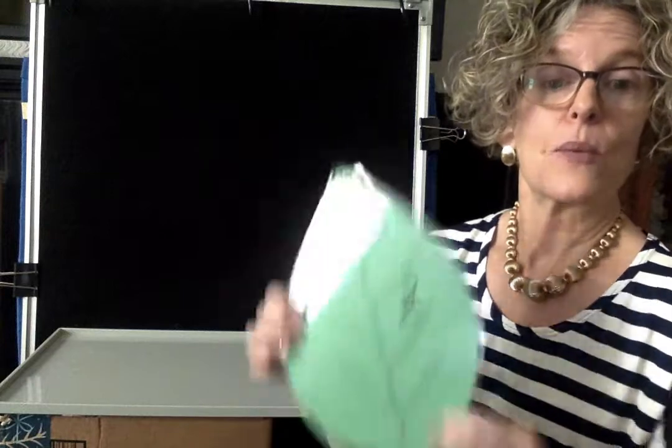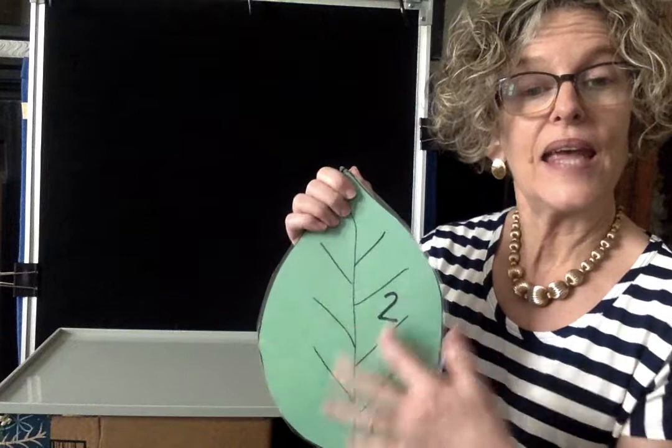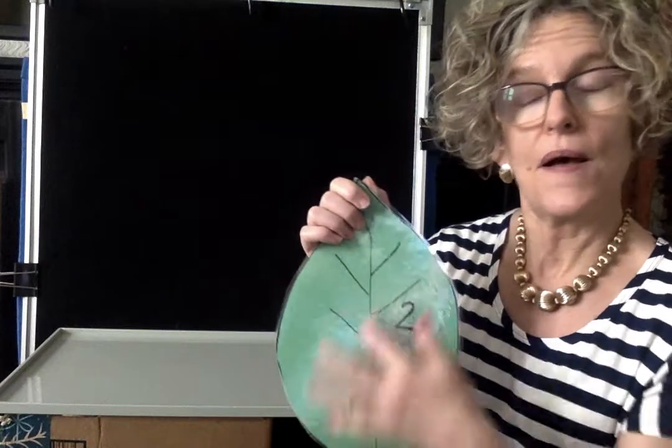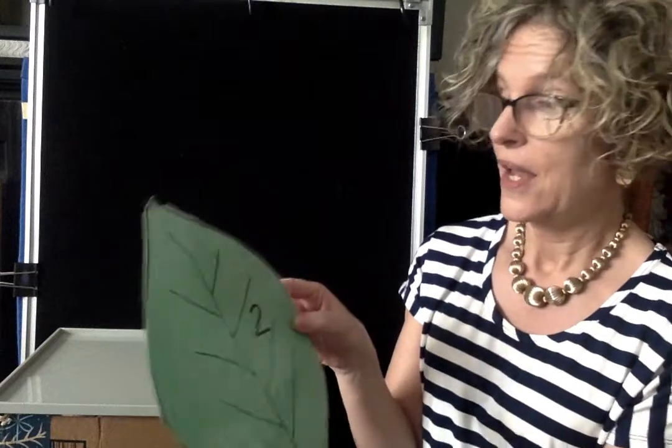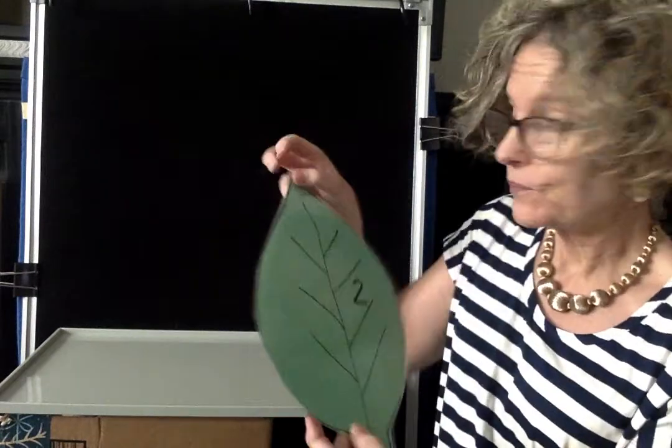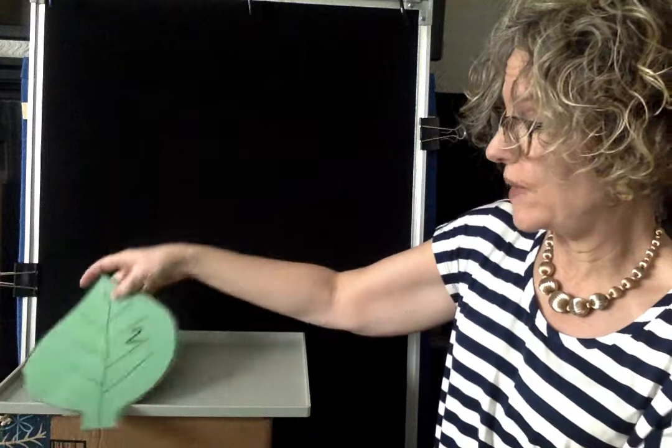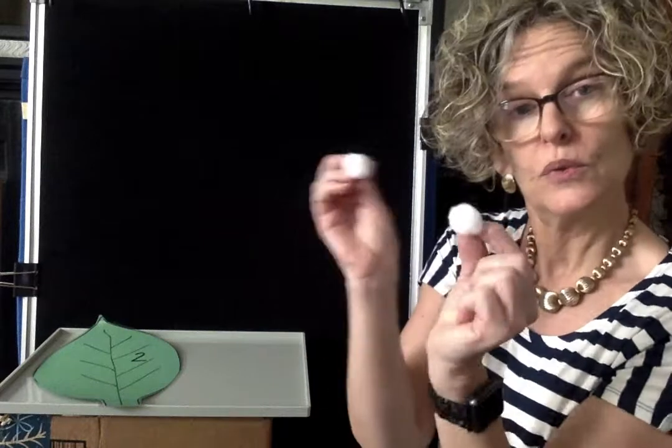So first you want to start with the low numbers to make sure that your child has one-to-one correspondence, and that means that when they see a number, they understand that there are objects that they can count out to go along to correspond with that number.